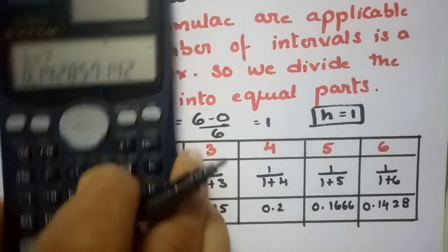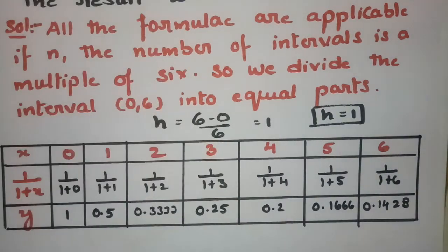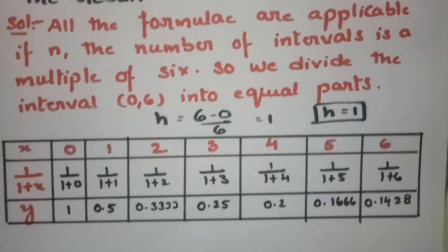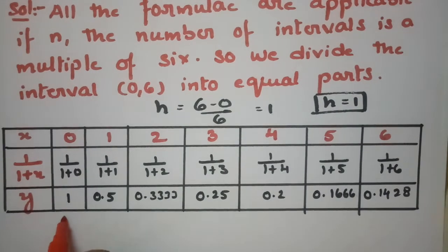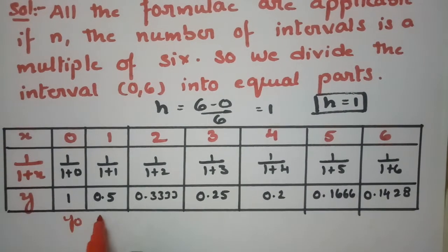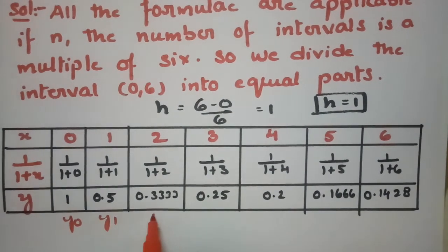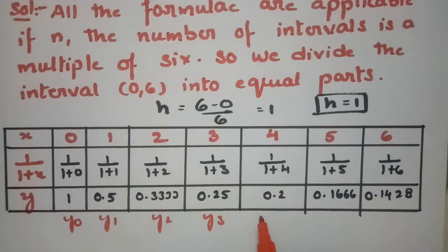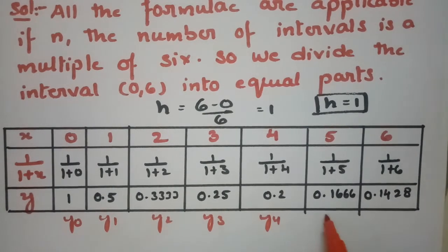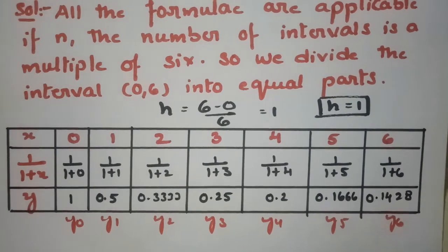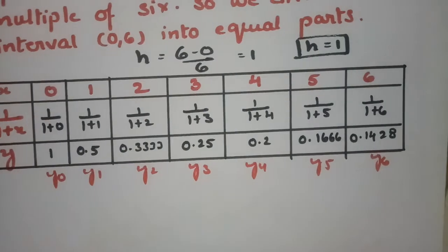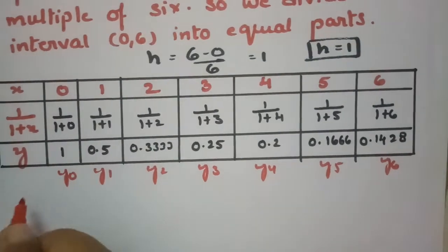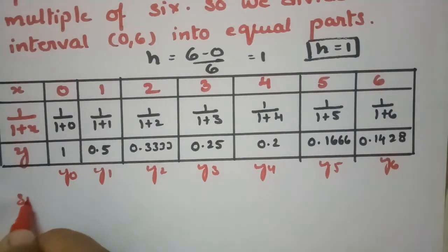After getting all these values, we name them: y₀ = 1, y₁ = 0.5, y₂ = 0.3333, y₃ = 0.25, y₄ = 0.2, y₅ = 0.1666, and y₆ = 0.1428.